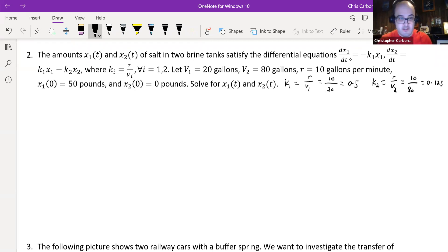So we could then rewrite our differential equations above as x₁ prime is equal to negative 0.5 times x₁, and x₂ prime is equal to 0.5 times x₁ minus 0.125 times x₂.